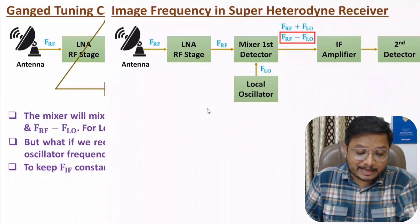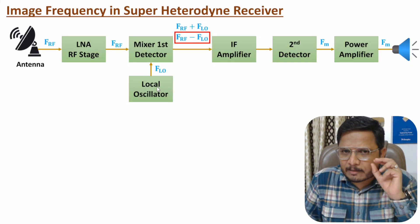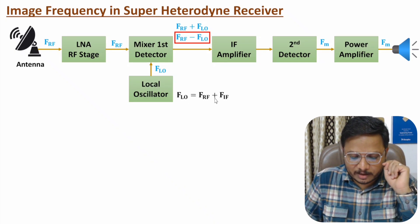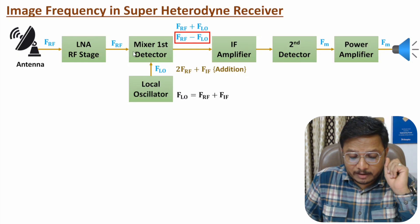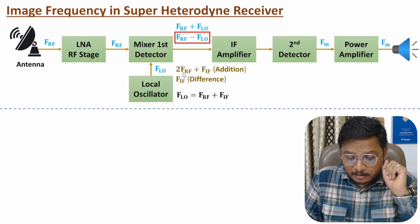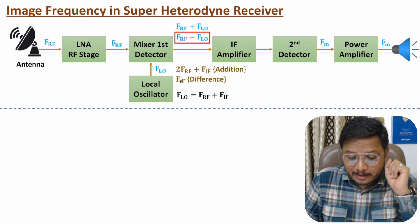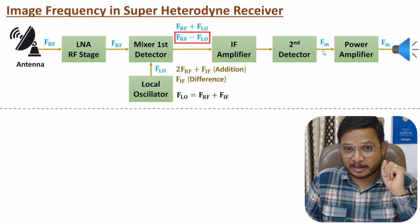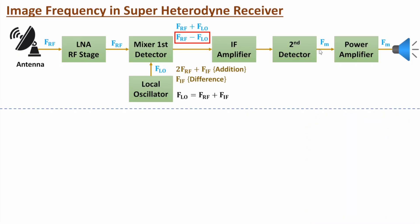Now let me explain the next interesting concept: image frequency. The local oscillator frequency is FRF + FIF. If we receive FRF, after mixing, the addition is FRF + (FRF + FIF) and the subtraction is FIF. Based on the filter, we can eliminate the sum and give the intermediate frequency to the IF amplifier to extract the message signal. The reason is FIF is constant. But image frequency will create an issue.